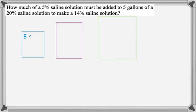Let this first one be the 5% solution. We don't know how much of that we have to add. The second one is the 20% solution. We're going to mix those together in this third jug, and that's going to give us a 14% solution. So we're mixing things together, which is what makes these mixture problems.